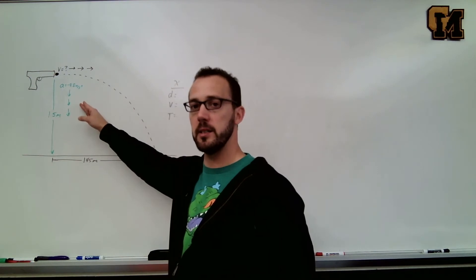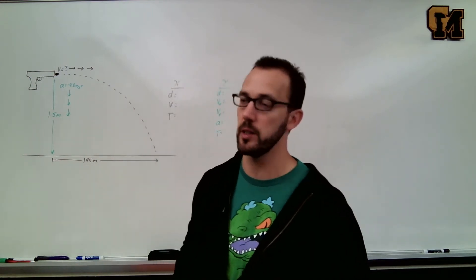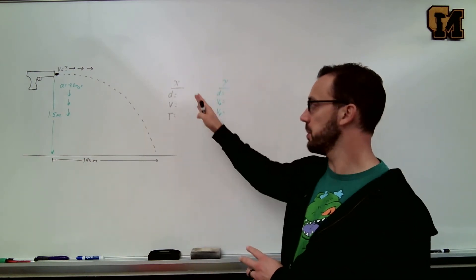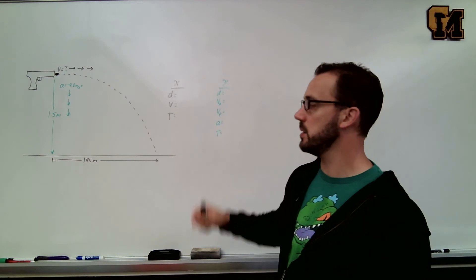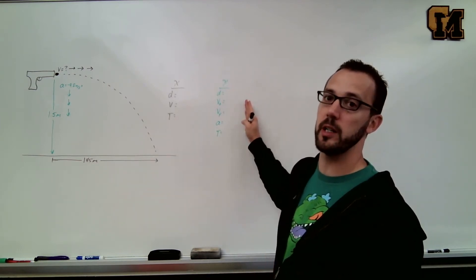And as always, all projectiles have an acceleration down of negative 9.8 meters per second squared. We can pull some numbers out of our picture and plug them into our x and y columns. All the x numbers are in black, all the y numbers are in green.